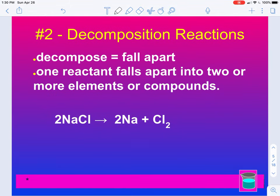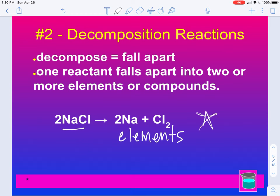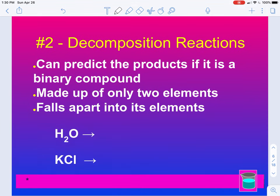Decomposition reactions — that means the compound is breaking apart or falling apart. There are two scenarios. The first is where a compound breaks up into its elements — these are just the elemental forms of the two things that make up the compound, like sodium chloride. You can also have them break up into compounds, but if that's the case, something else will need to be given to you. You can predict the products if it is a binary compound — it will fall apart into its individual elements. So H2O will fall apart into hydrogen and oxygen, but remember, hydrogen and oxygen are two of those seven elements always written with a subscript two.